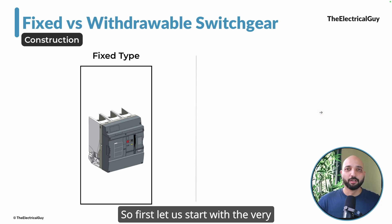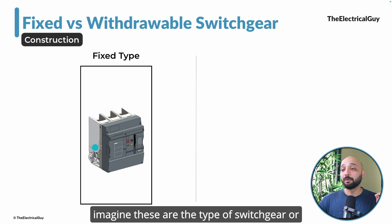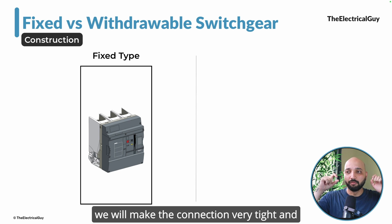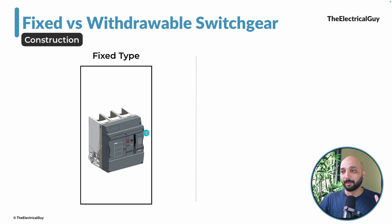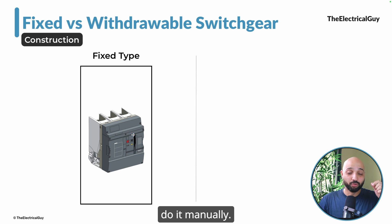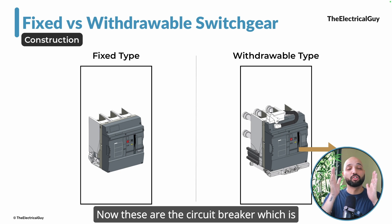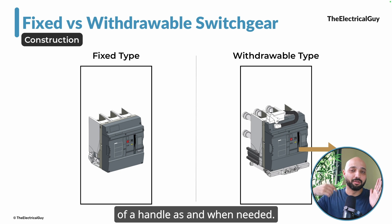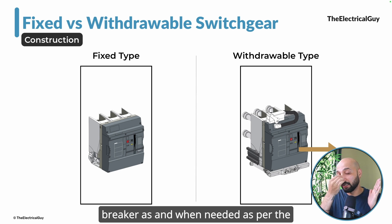Let us understand the difference in construction between these two variants. Fixed type switchgear, as the name suggests, is fixed permanently inside the panel with nuts and bolts — the bus bar connection is also fixed and cannot be removed unless done manually. The withdrawable type circuit breaker is placed inside the panel but not fixed permanently; you can take it out with a handle as and when needed.